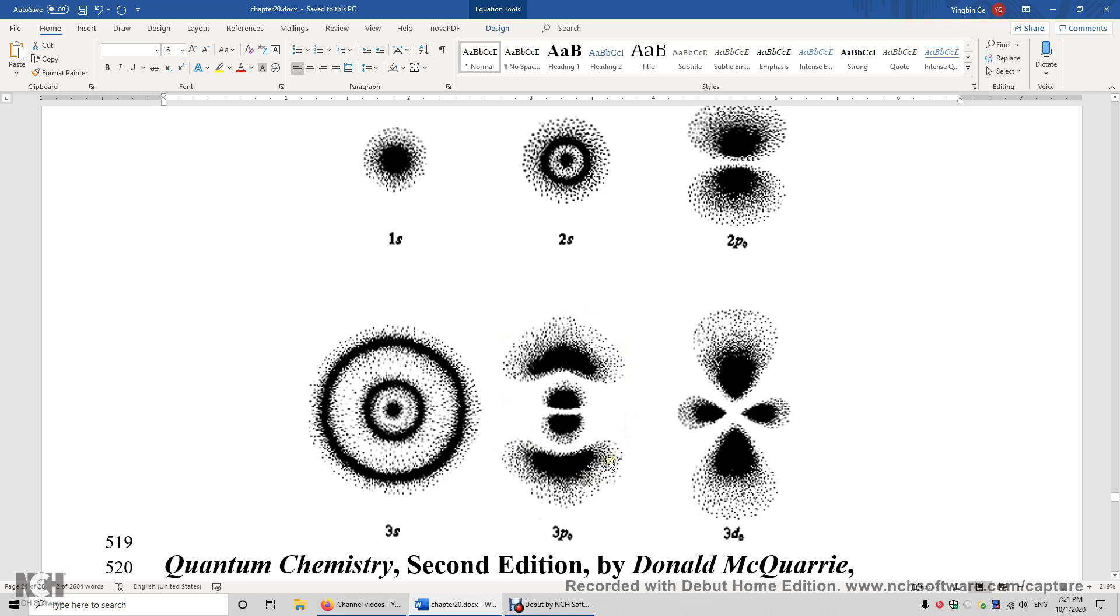And over here, this is 3pz. We have one planar nodal surface when z is 0. We have another spherical nodal surface when R is equal to 6 atomic units of length. Over here, this is 3dz squared atomic orbital.